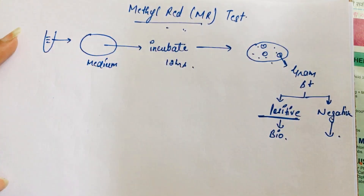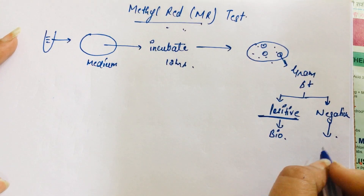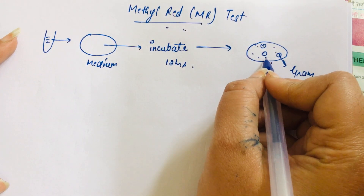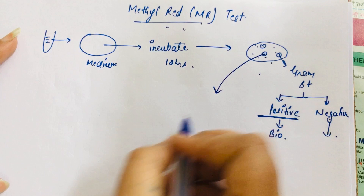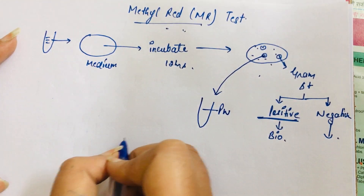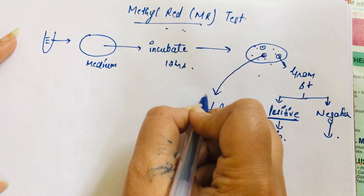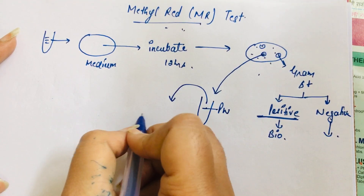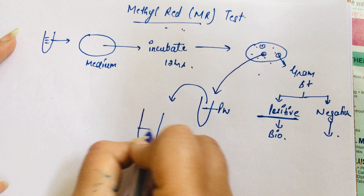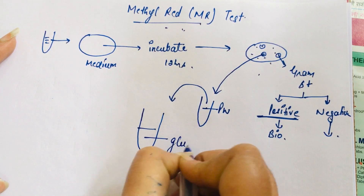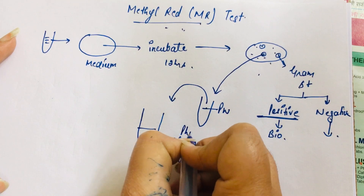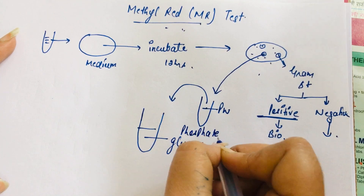In this lecture we will study about the methyl red test. We take a suitable colony from the petri plate and transfer it into peptone water. From the peptone water, for the methyl red test we then use phosphate glucose broth as the medium.